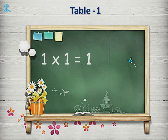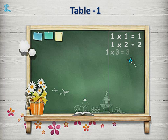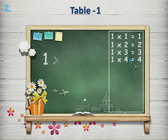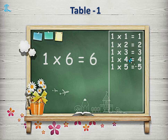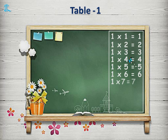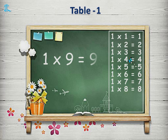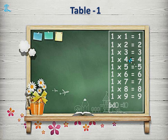1 1s are 1. 1 2s are 2. 1 3s are 3. 1 4s are 4. 1 5s are 5. 1 6s are 6. 1 7s are 7. 1 8s are 8. 1 9s are 9. 1 10s are 10. Shall we repeat the Table 1 once again?